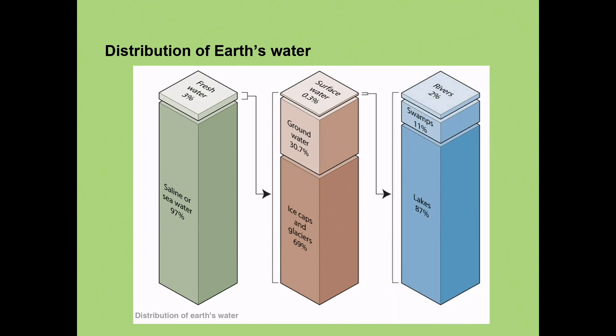So we're going to go into the surface water a little bit more. Rivers, two percent of that 0.3 is rivers. 11% is swamps, and the rest is in lakes, which are 87 percent.